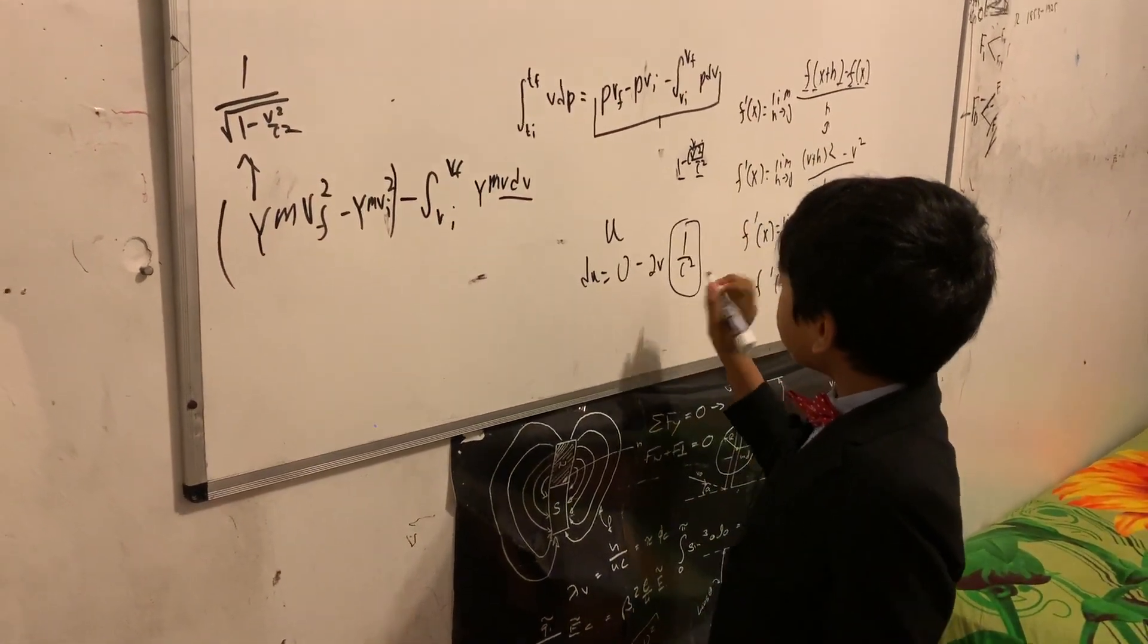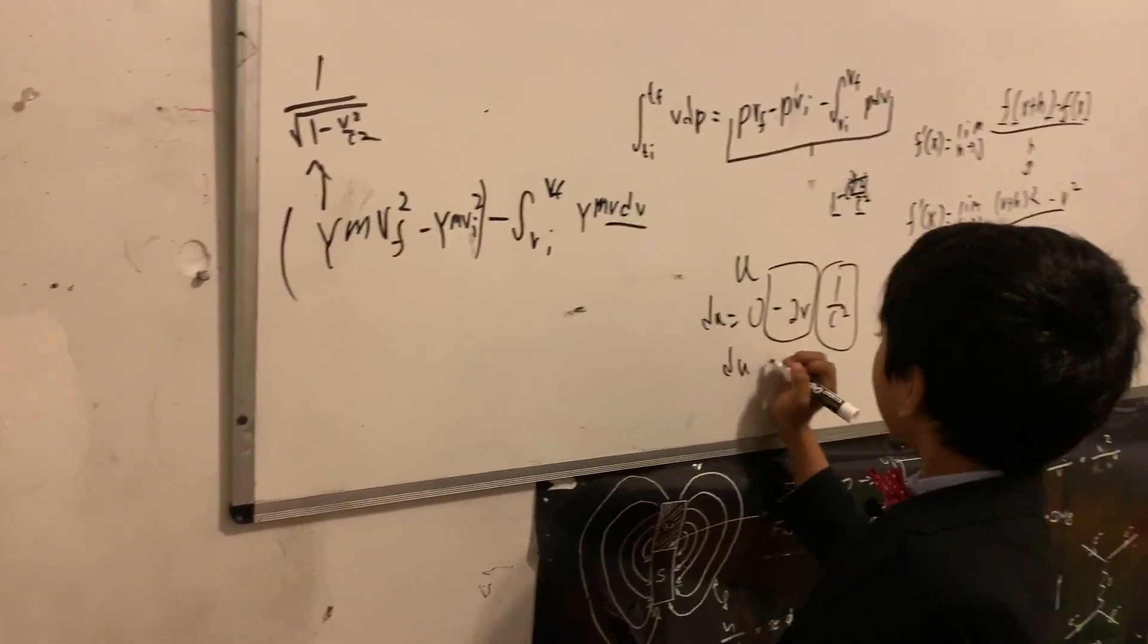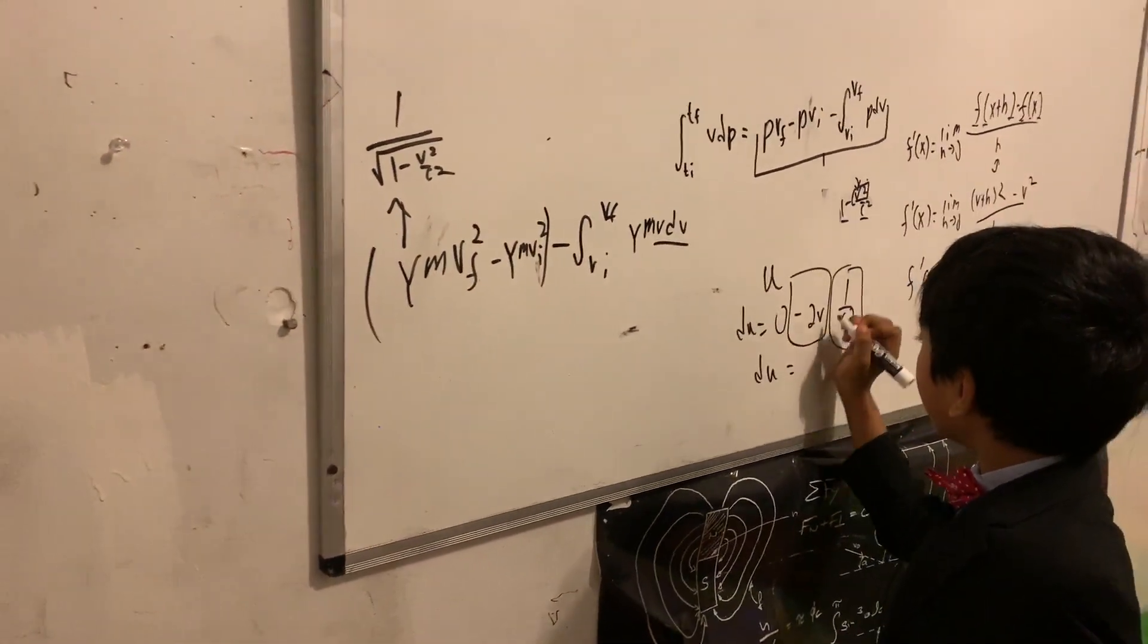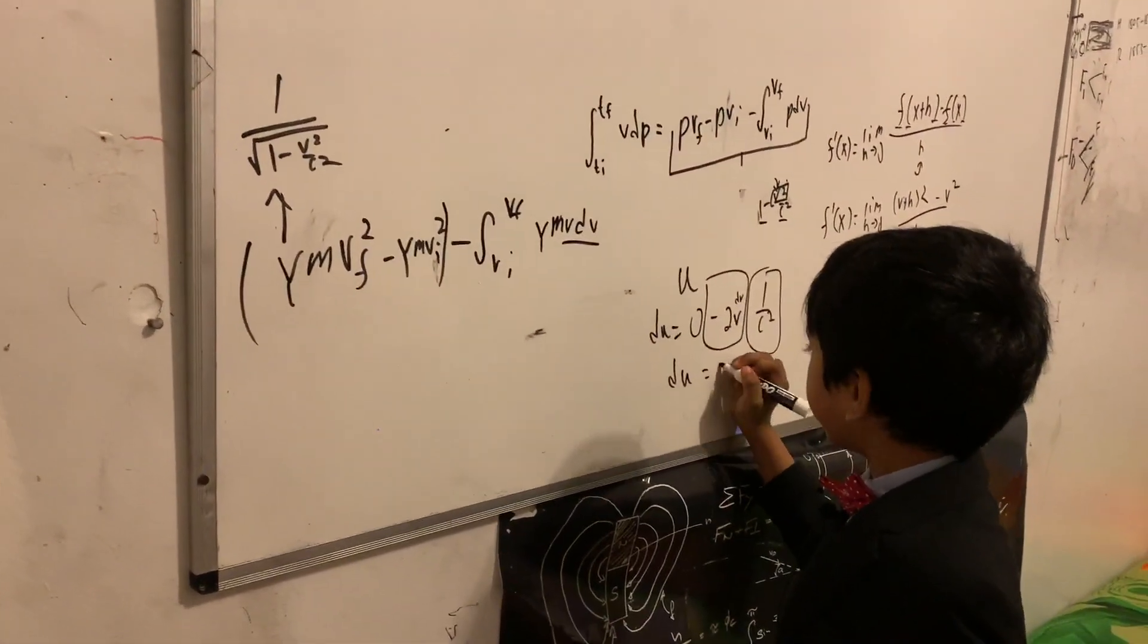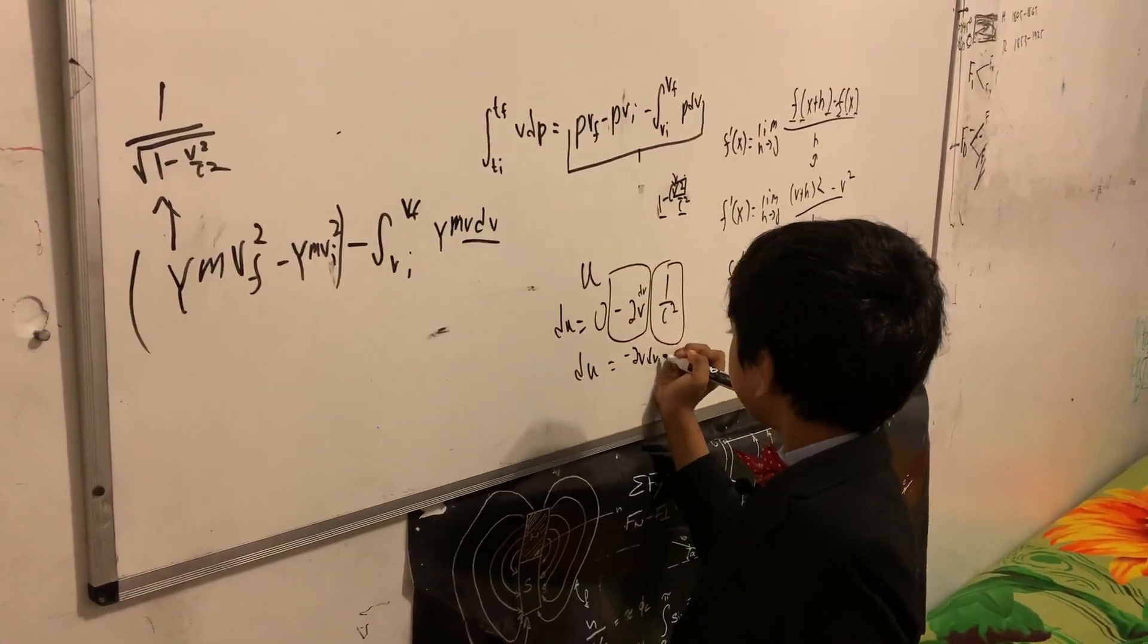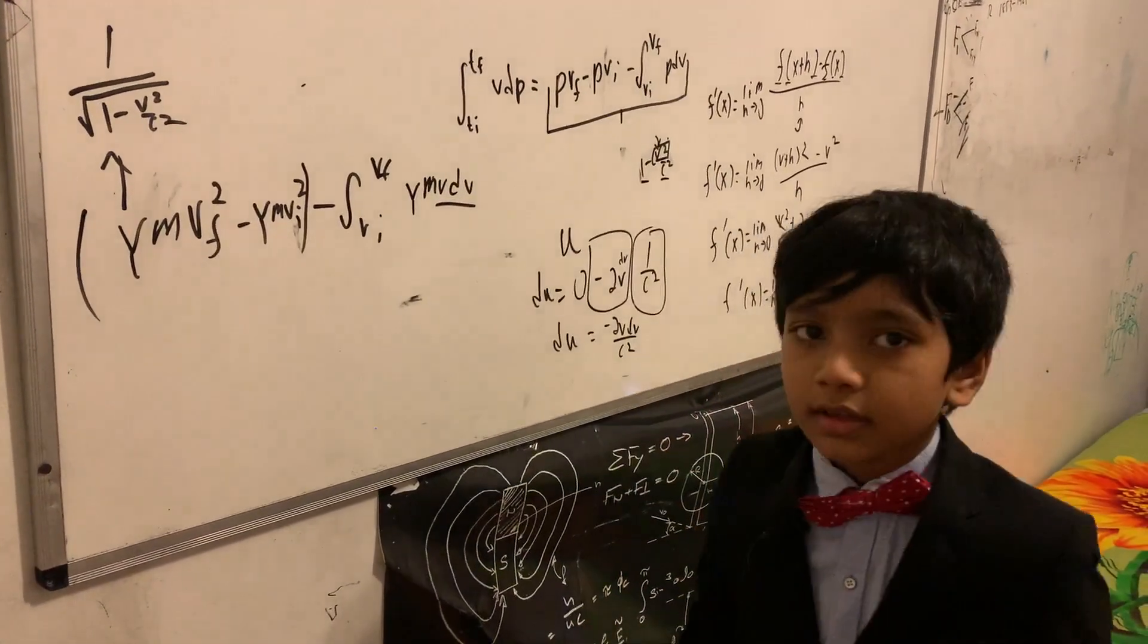So, now we multiply this by this, giving us dU equals to, oh yeah, we took this with respect to V. So, negative 2V dV over C squared.